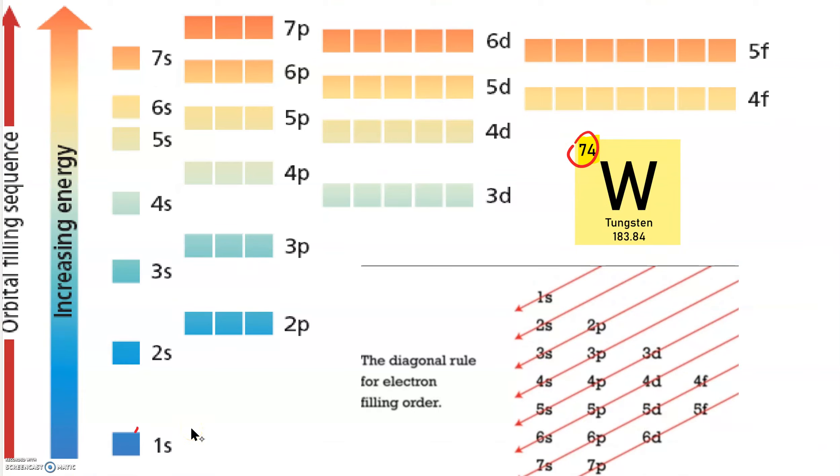So here we have 1, 2, 3, 4, 5, 6, 7, 8, 9, 10, 11, 12, 13, 14, 15, 16, 17, 18. This stops being intuitive after 3p. So now we're going to go to 4s, 19, 20. After 4s, 3d, 21, 22, 23, 24, 25, 26, 27, 28, 29, 30. After 3d, 4p, 31, 32, 33, 34, 35, 36.